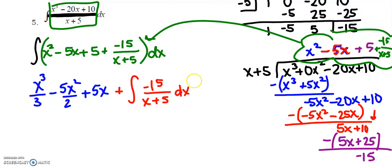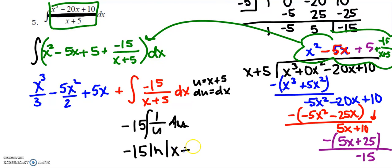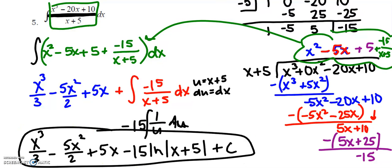This time when I divide I can try what I wanted to try originally which was a u-sub. So u equals x+5, du equals dx. This -15 is just going to hang out in front and I get the integral of 1/u du. This then becomes -15 ln|x+5|. Each one of these would have had their own +C but they get absorbed into one constant added on at the end.